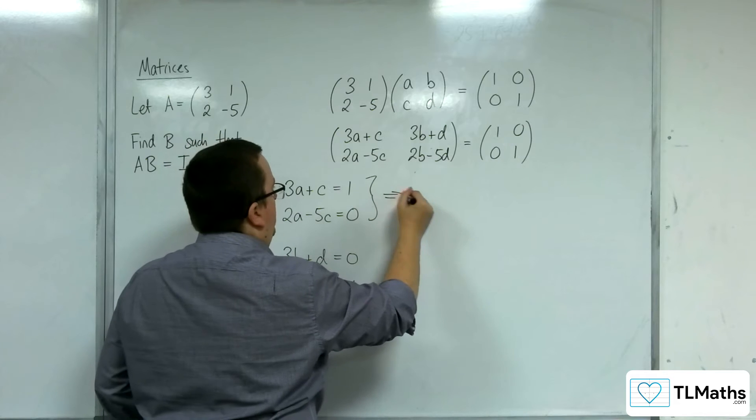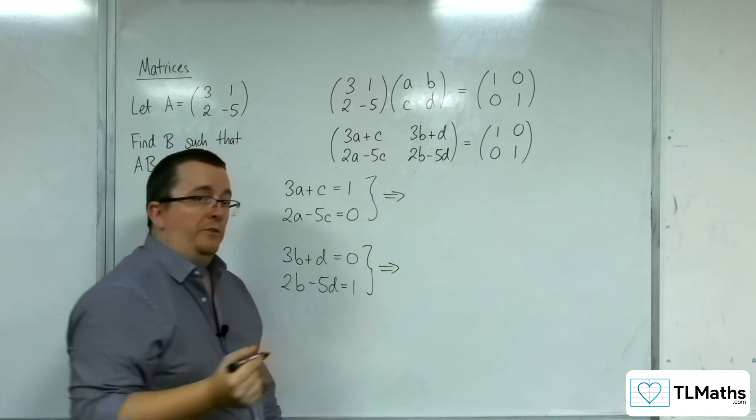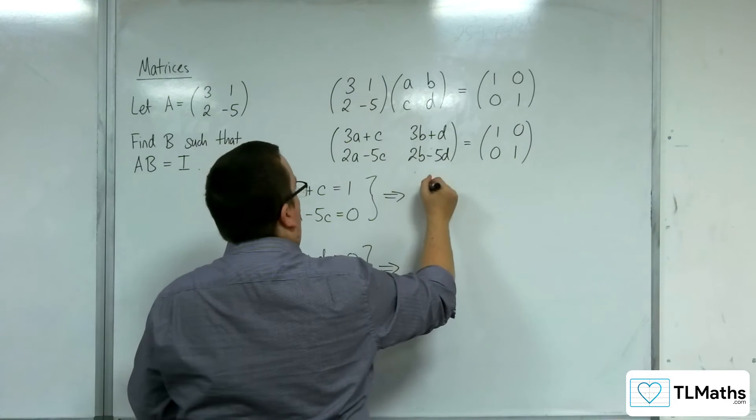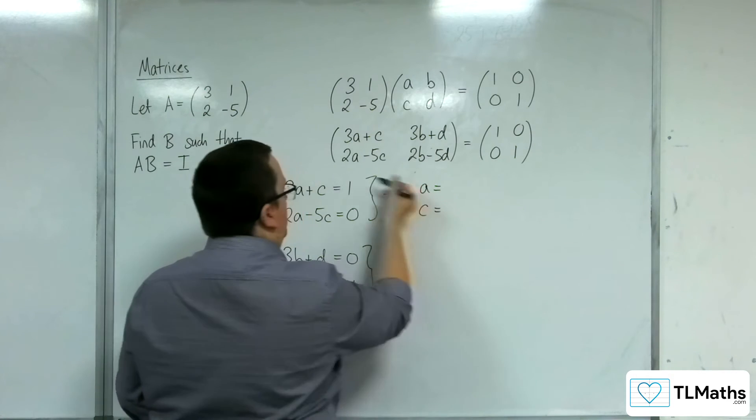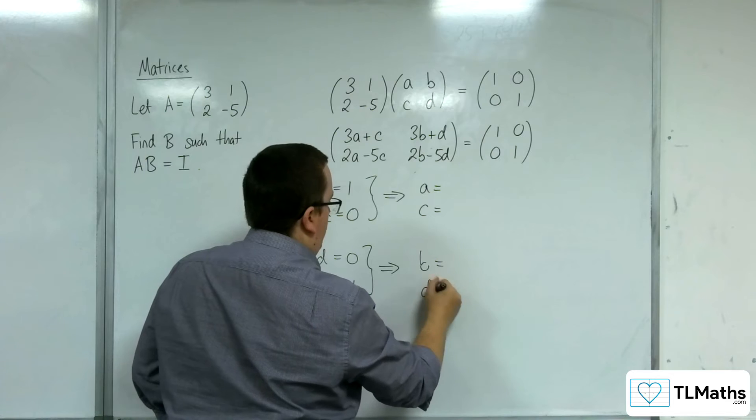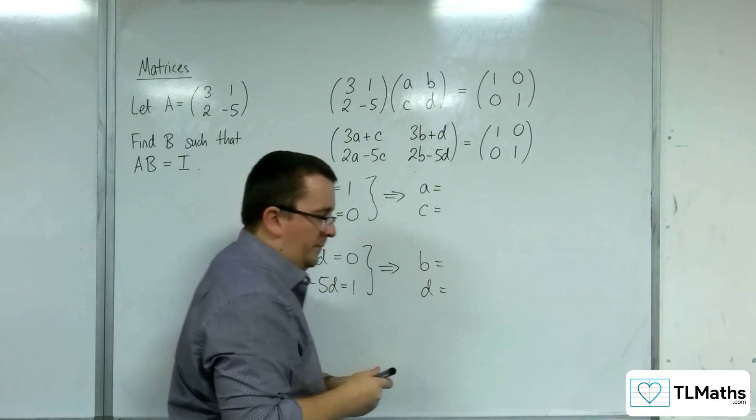So this gives me two sets of simultaneous equations where I can work out the values of A and C from these two and B and D from these two.